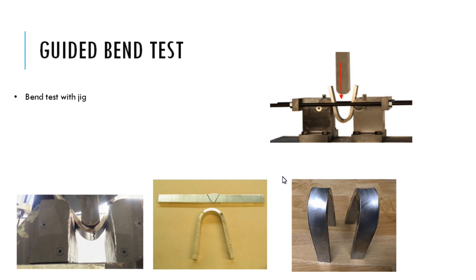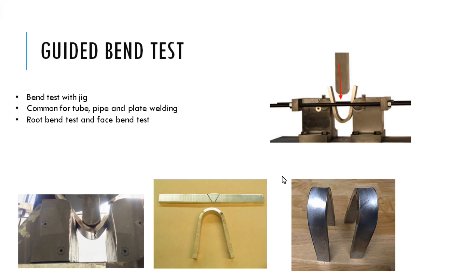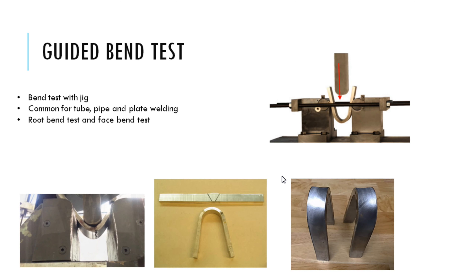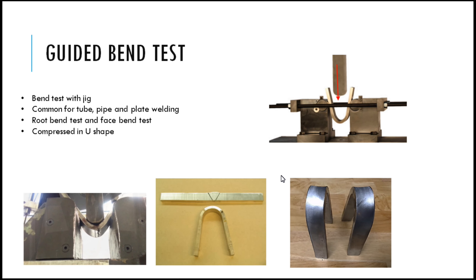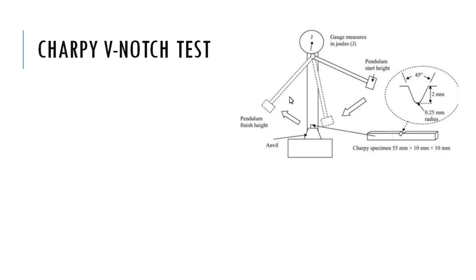Guided bend test: as you can see from the figure, the bend test is done with a jig and it is very popular for tubes, pipes, and plate welding inspection. Root bend and face bend are very common for the guided bend test. The root side or the face side of the weld can be bent and evaluated for ductility. This bend test is done by bending the test coupon to a U-shape, and once the U-shape is achieved, the weld profile and base metal are closely monitored to determine if the coupon is acceptable.